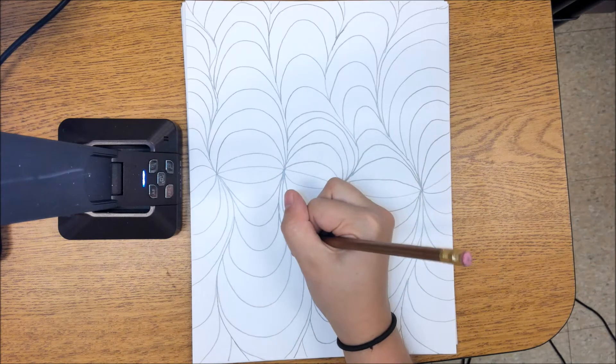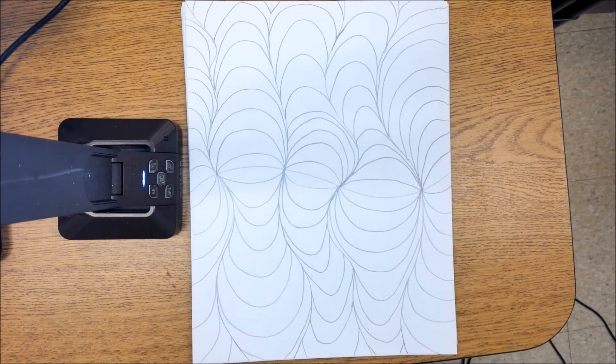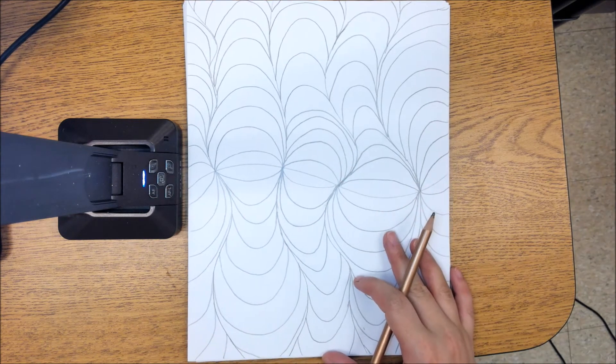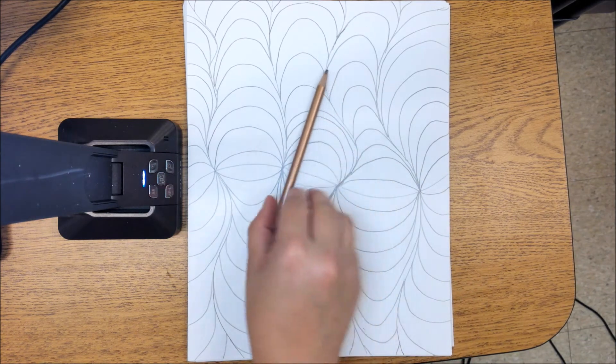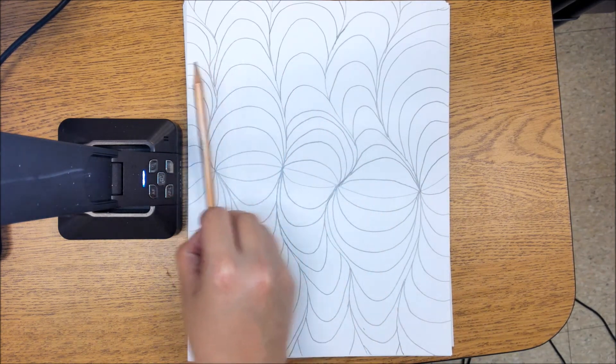So you guys will have the choice to kind of do this one of two ways. You can do it in pencil if you want and kind of have the whole thing a grayscale.